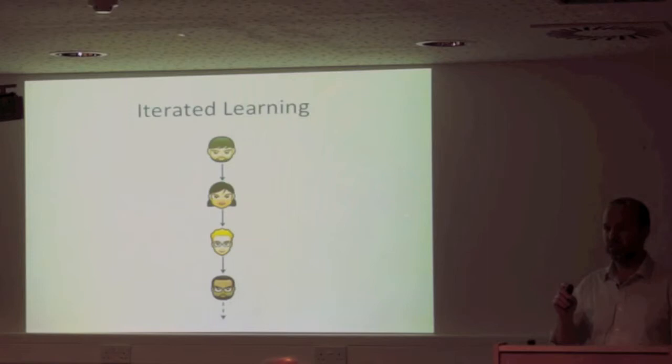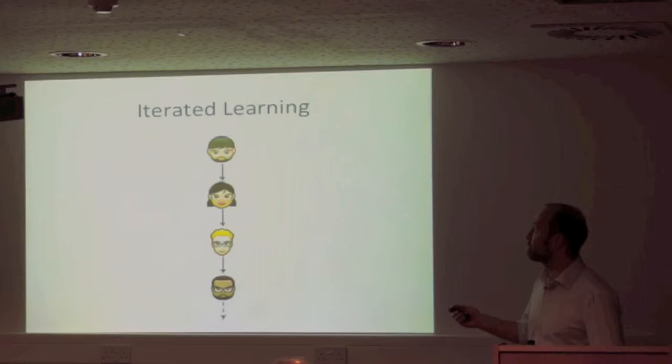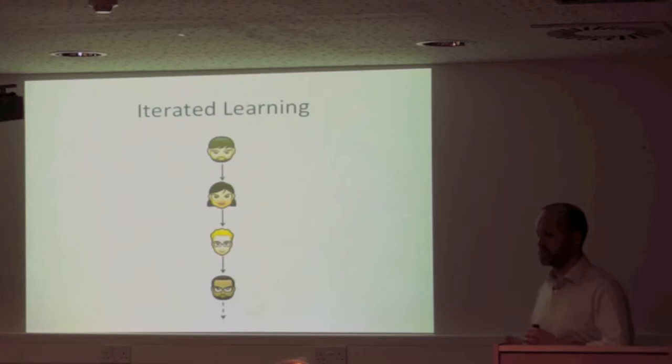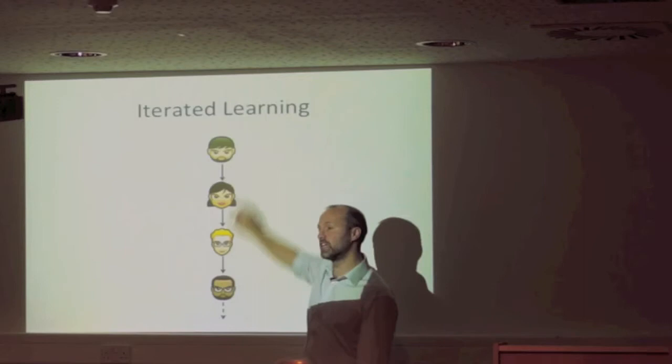Participants don't know they're in a diffusion chain — they think they're just learning a language provided by the experimenter. The same set of 27 pictures is used throughout; it's the labels that may change. If the language is extremely well learned, it's reproduced perfectly and doesn't change through transmission. But if mistakes are made, the language may change. Participants are told not to use English, and they actually comply — they do their best to learn and reproduce the strange alien language they were trained on.